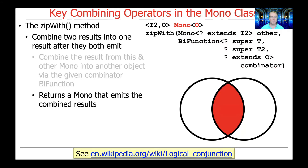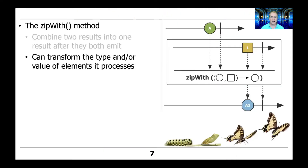Essentially, if you think about it from a logic perspective, it returns a Mono that emits the combined results. So this is essentially doing logical conjunction — it's conjoining the two together. This particular method can be used to transform the type and/or the value of the elements that it processes, a bit like map, flatMap, or flatMapMany. So things can change the value, they can change the type. It's a really interesting and powerful method.